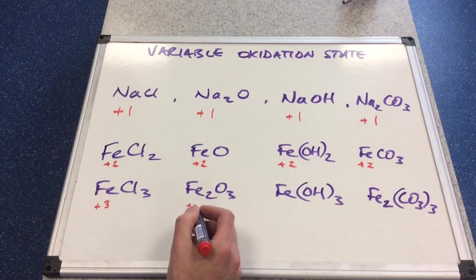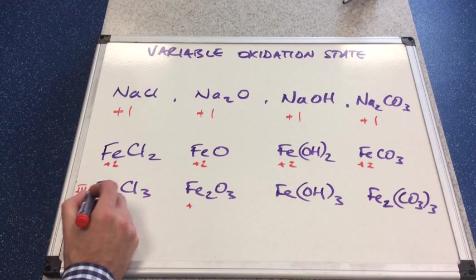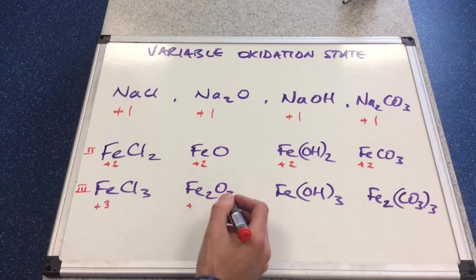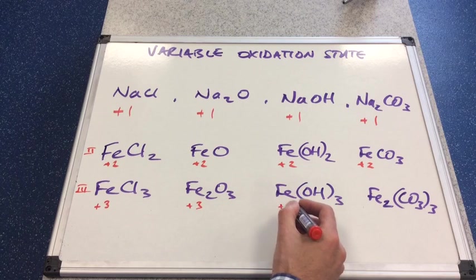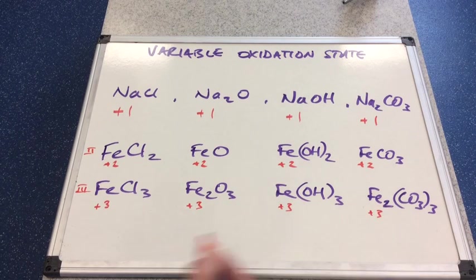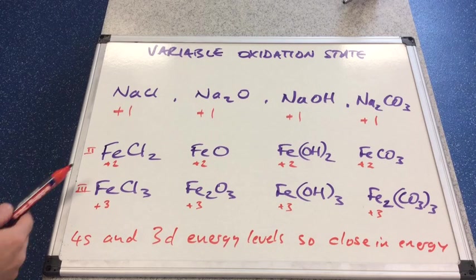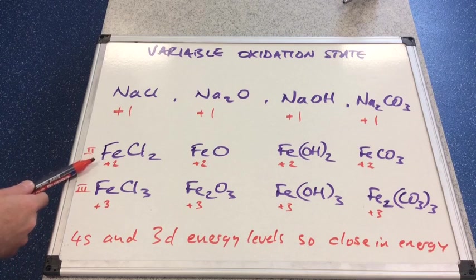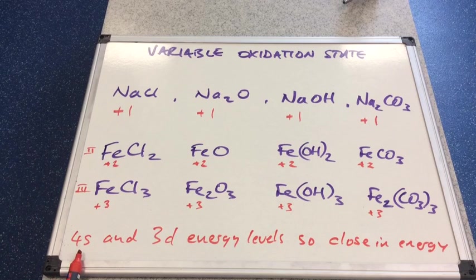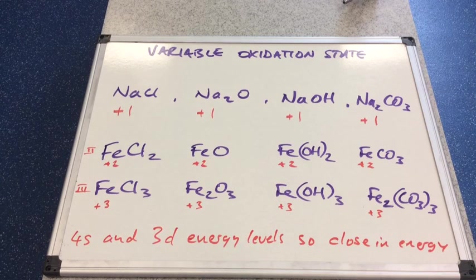That's iron three chloride with that Roman three, iron three oxide, iron three hydroxide and iron three carbonate. The reason for that is the 4s and 3d energy levels are very close in energy. When these transition elements form ions — plus two and plus three — they lose the 4s electrons first, then the 3d electrons are lost. Because these are so close in energy, it's quite easy for them to lose different numbers of electrons.